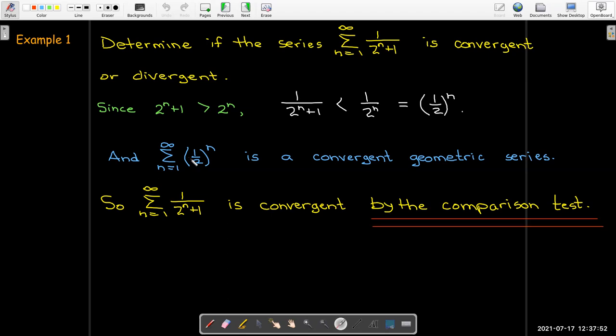So since the given series has smaller terms than the convergent series, then we can conclude that it's also convergent by the comparison test. And so again, I want to emphasize whenever you discuss the convergence or divergence of a series or an improper integral, you have to give a reason. How do you know? Why is it convergent?